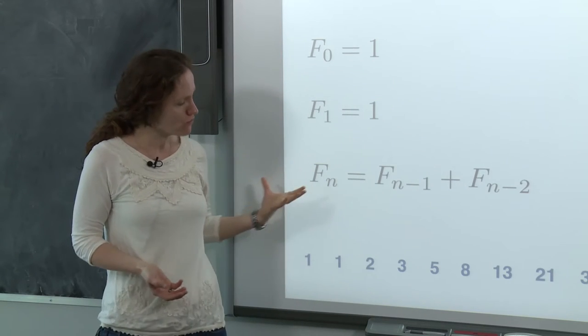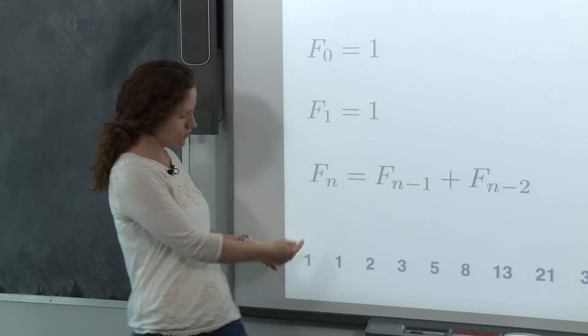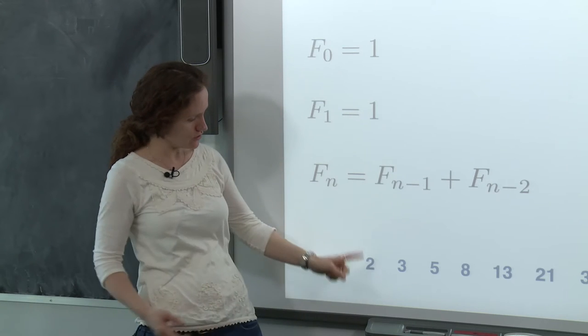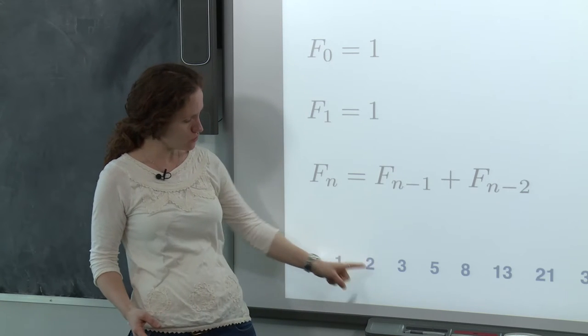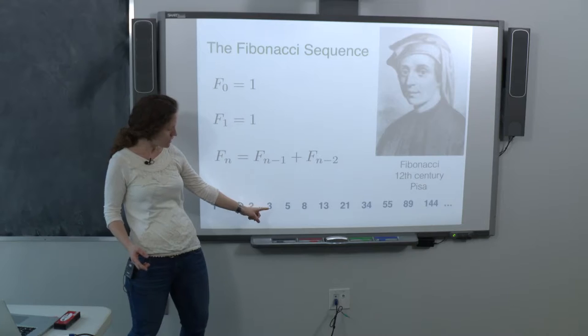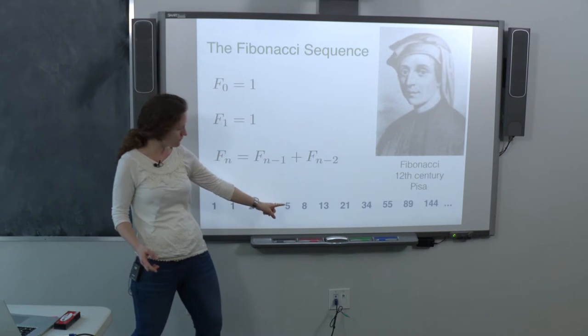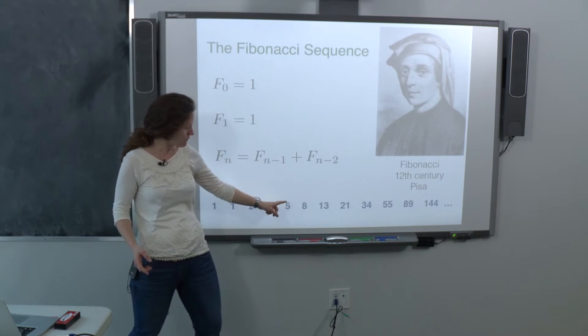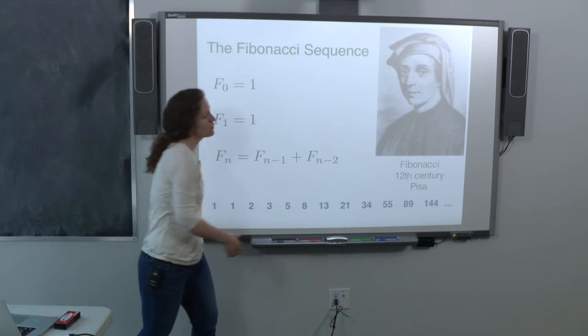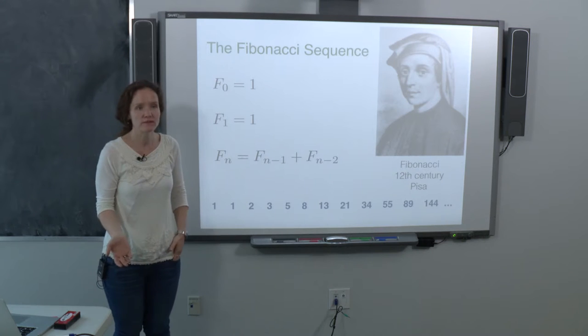If you follow this recipe starting with 1 and 1, you get 2, then 2 plus 1 is 3, 3 plus 2 is 5, 5 plus 3 is 8. You generate this infinite sequence of numbers.